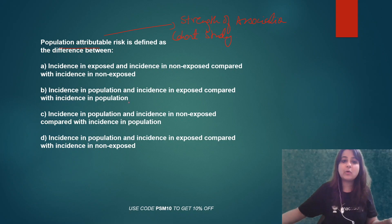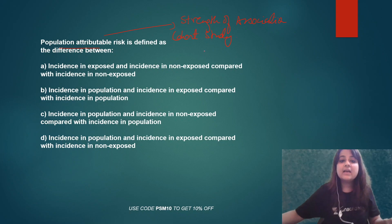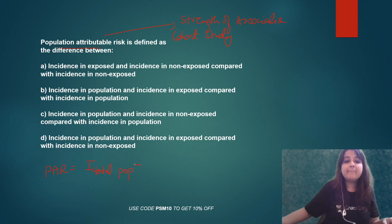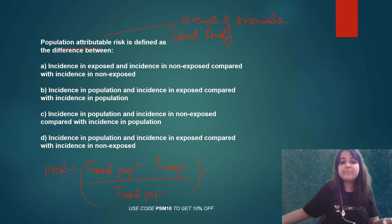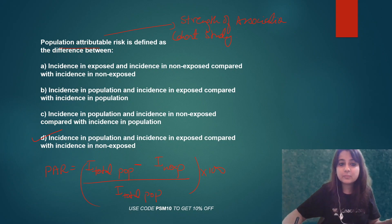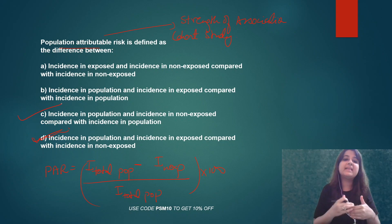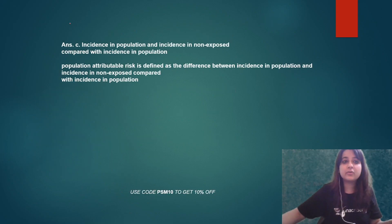What is the formula for population attributable risk? Population attributable risk is the incidence of the disease in the total population minus incidence among non-exposed, divided by incidence among the total population, multiplied by 100. So the answer here is C: incidence in total population minus non-exposed, divided by incidence in the total population.